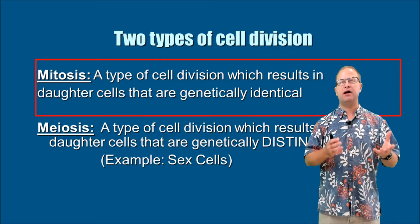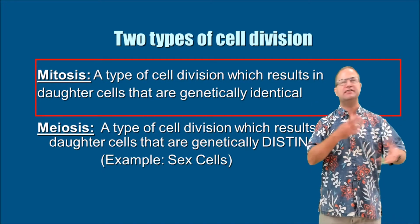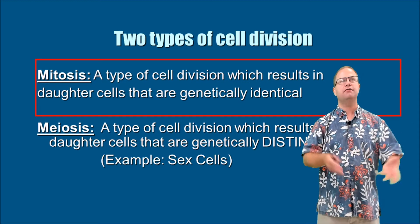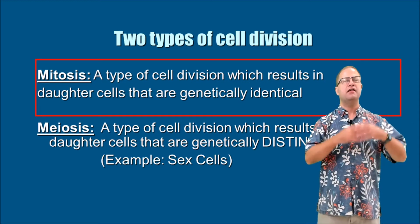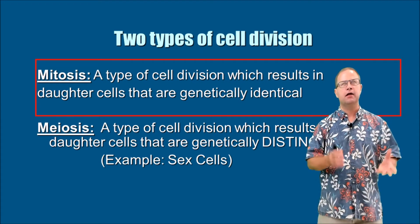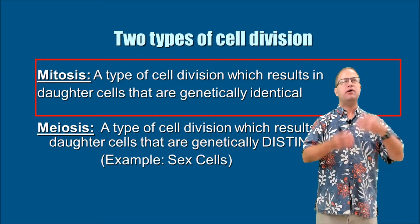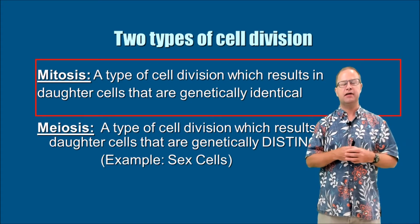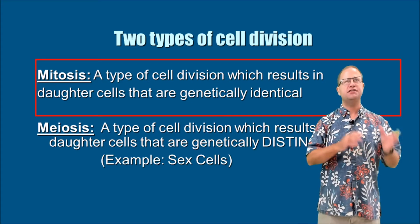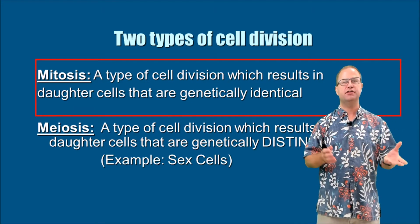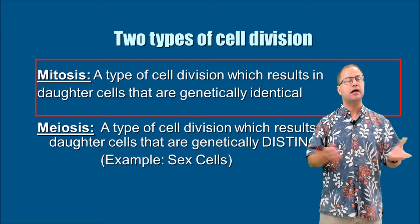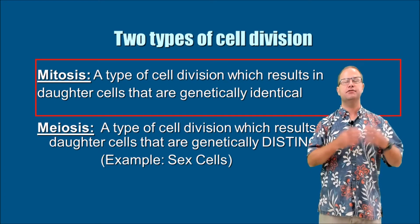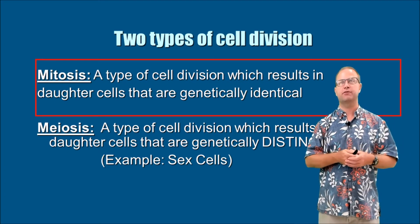This happens all over the body when your intestinal cells are replaced, when your skin cells slough off and are replaced — it's all happening through mitosis. The only time we have something called meiosis happening is in the gonads, and meiosis is different because it results in the production of cells that are genetically distinct from the parent cell and also genetically distinct from one another.